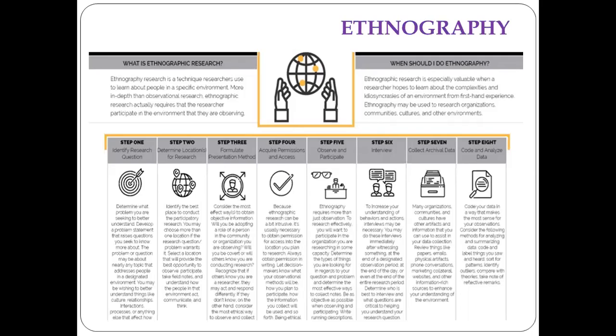The procedure starts with identifying the research question: determine what problem you are seeking to better understand, make a statement from that understanding, and raise questions relevant to that statement. Then identify the topics you are going to address — the people in that environment, their relationships with culture, their interactions and processes. After that, identify the locations of research. Once the research question is identified, find out whom you want to study and how to gather information. It may be in multiple locations when you need diversified ideas from different groups.